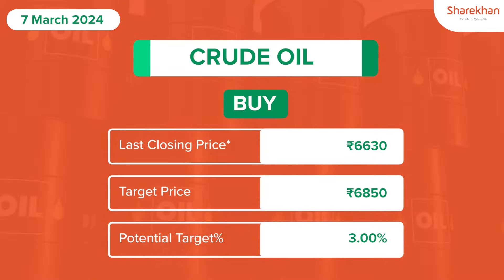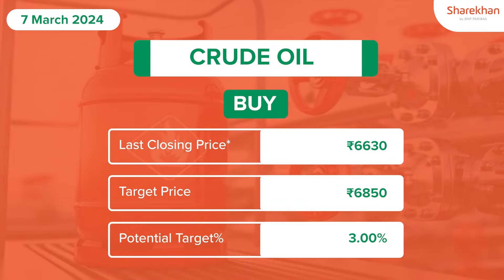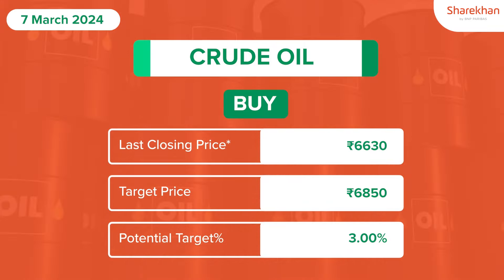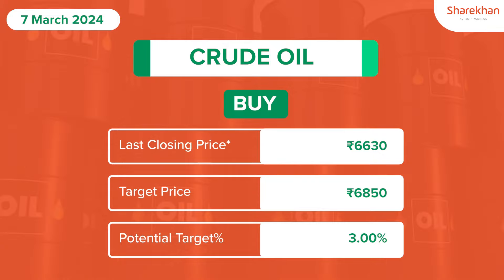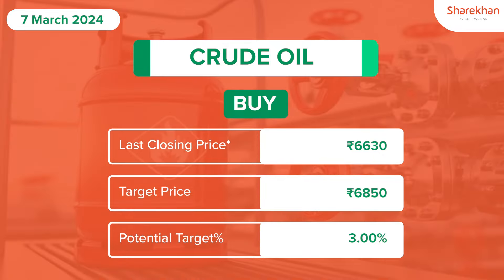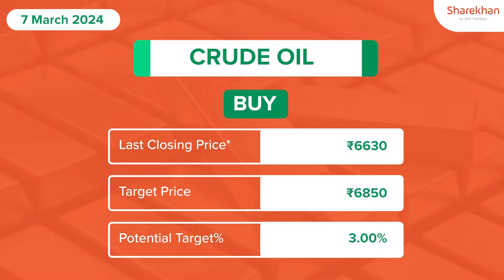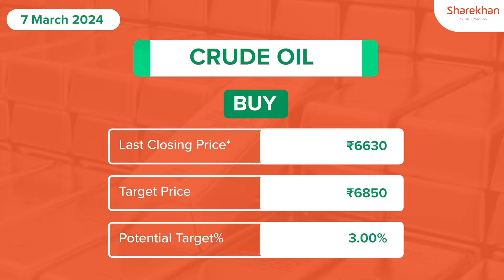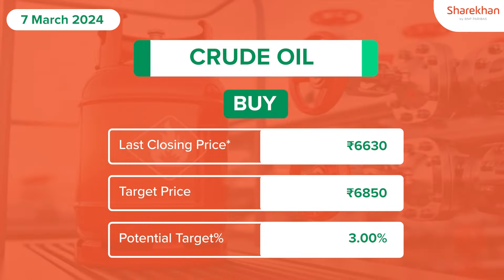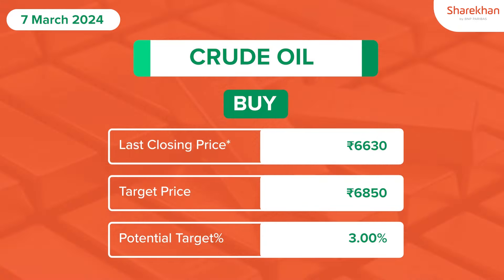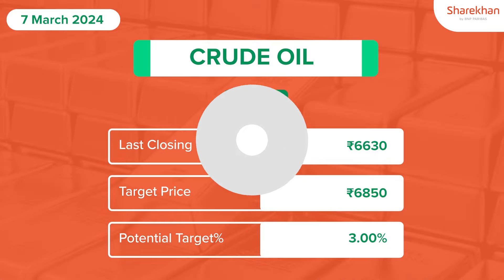Until a breakout above 6650 occurs, we can trade within this range. After the breakout, we can target the 6850 level. A reversal of this bullish bias would occur around 6450. Therefore, we expect prices to trade with a sideways to positive bias for the day ahead. Thank you.